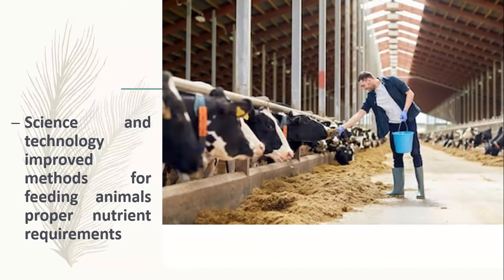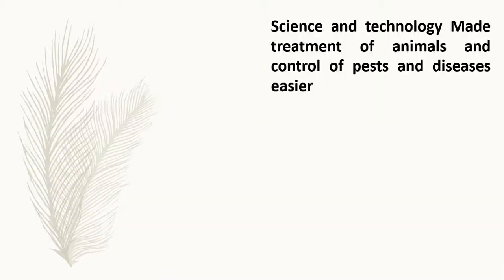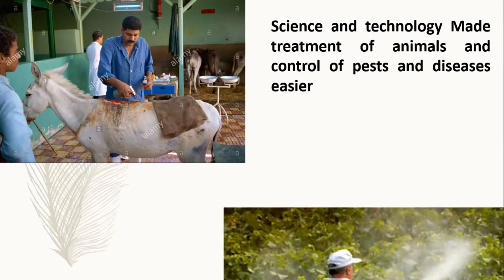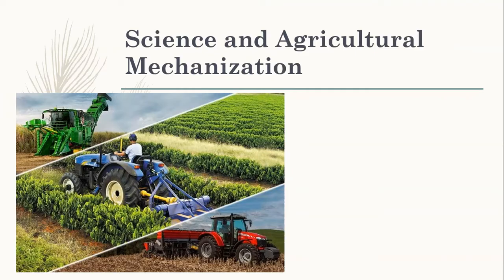Science and technology also help improve animal feeds. With the help of science, animal feed can provide very healthy food for animals so as to maintain their proper nutrition. Science and technology also make the treatment of animals and control of pests very easy.